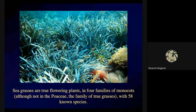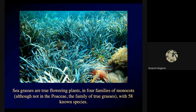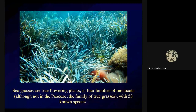Don't confuse seaweeds with seagrasses, because seagrass is true flowering plants — they're in the monocots. They're not in the family of true grasses, but they are vascular plants with leaves, veins, and stems. There are 58 known species. You get a lot of this in the Gulf of Mexico. The sandy beaches are where everybody wants to put motels, but there is a lot of seagrass habitat as well, and it's biologically very rich — one of the most important habitats in the temperate ocean.